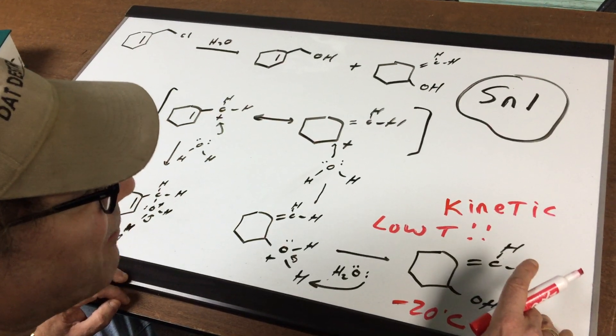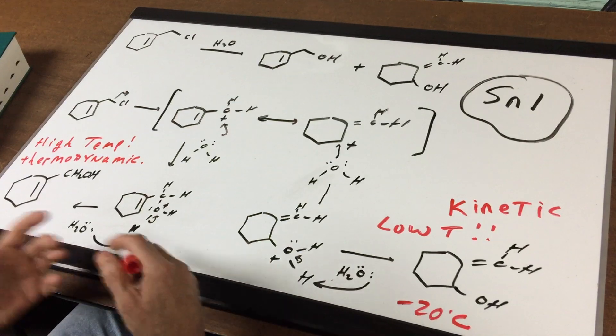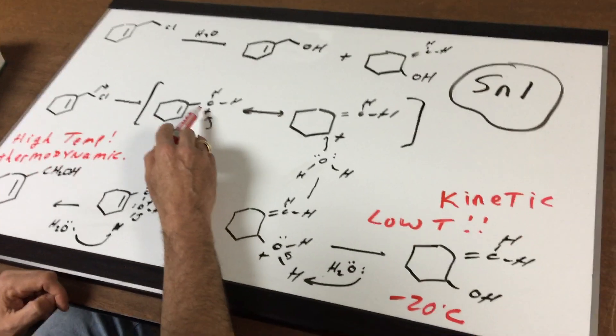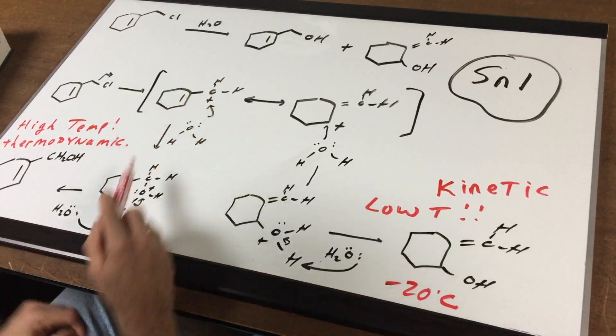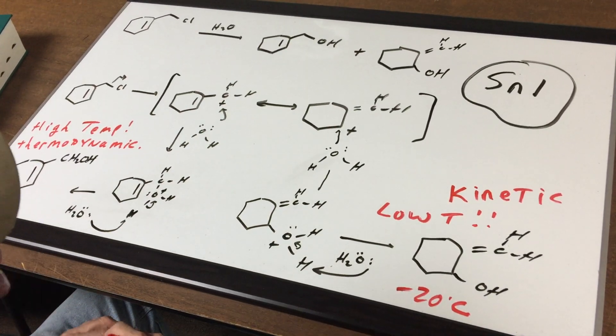You would form this as the major and this as the minor over here. If the temperature is higher though, even though the carbocation was not the most stable, the final product has got a double bond that's the most internalized.